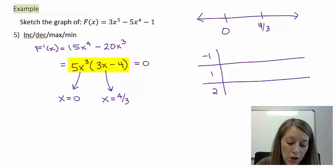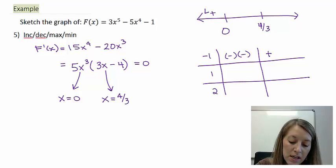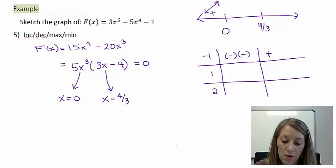So let me test them in here. If I take -1 and I cube it, that gives me -1 times 5 is -1. If I take -1 times 3, that gives me -3 minus 4 gives me a negative. So if I multiply these, that gives me positive, which tells me that my graph is increasing to the left of 0.